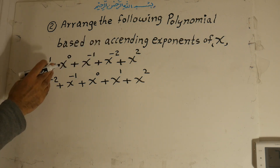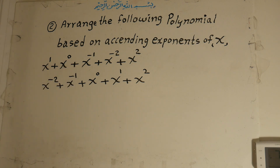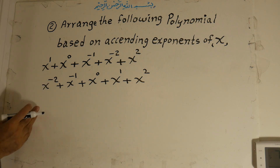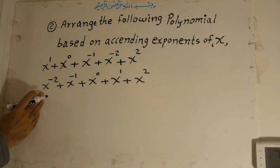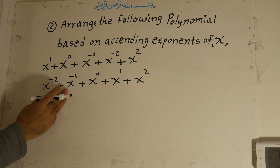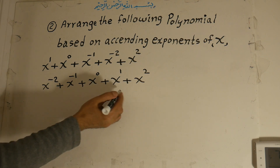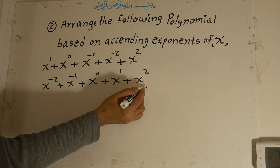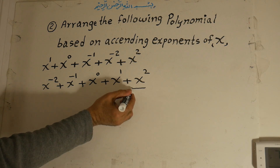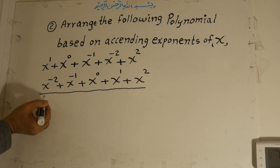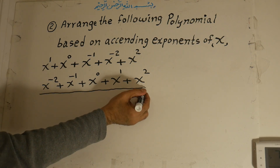I repeat: arrange the following polynomial based on ascending exponents of x. The polynomial is x to the power of one, plus x to the power of zero, plus x to the power of negative one, plus x to the power of negative two, plus x to the power of positive two. Ascending means from smallest to greatest: x to the power of negative two, then x to the power of negative one, then x to the power of zero, then x to the power of one, then x to the power of two. That is the answer.